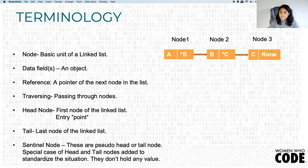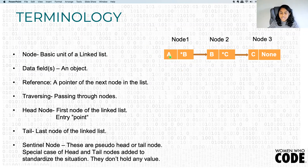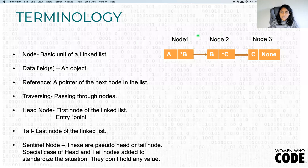The tail node is the last node in the linked list. There are special kinds of nodes called sentinel nodes, otherwise called dummy nodes. They don't have any value and they point to the head node. Let's assume there's a dummy node that will not have any value and it usually points to the head node. These are created to handle some special situations in the code, which we'll go over in future slides.